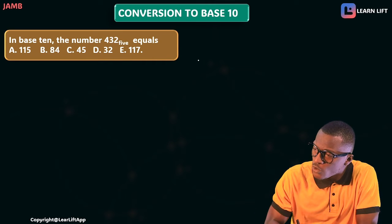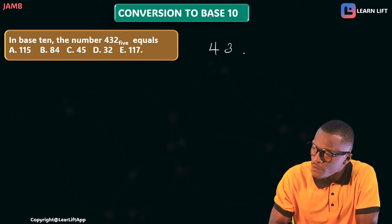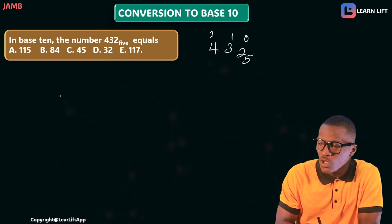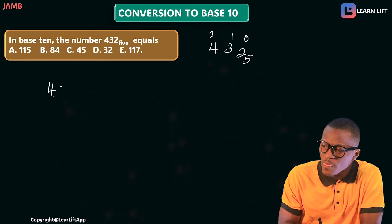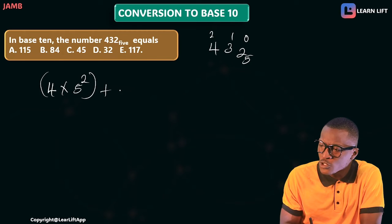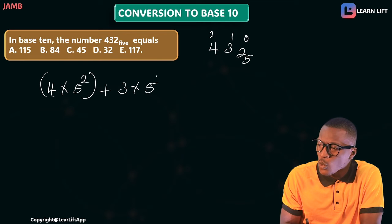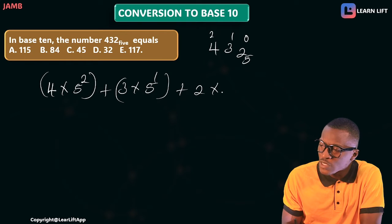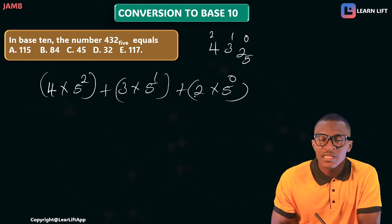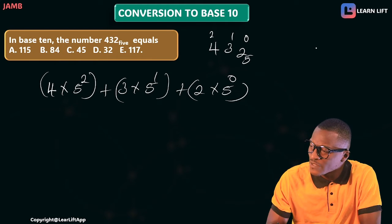The next question: in base 10, what is 432 base 5? This number has digits 4, 3, 2 in base 5. We number positions from the right: position 0, position 1, position 2. This gives us 4 times 5 raised to power 2, plus 3 times 5 raised to power 1, plus 2 times 5 raised to power 0.